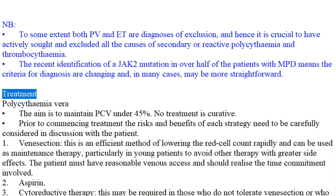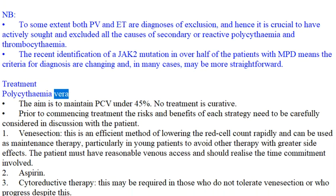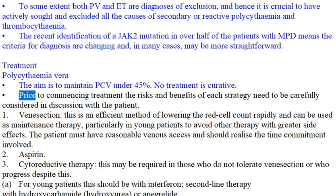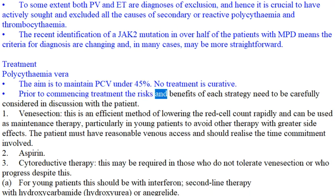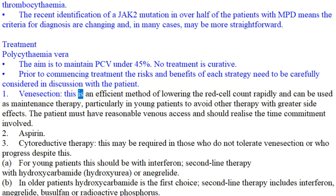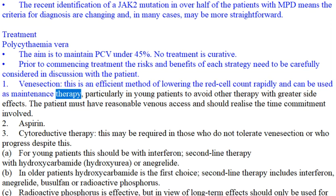Treatment — Polycythemia vera: The aim is to maintain PCV under 45%. No treatment is curative. Prior to commencing treatment, the risks and benefits of each strategy need to be carefully considered in discussion with the patient. 1. Venesection: This is an efficient method of lowering the red cell count rapidly and can be used as maintenance therapy, particularly in young patients to avoid other therapy with greater side effects.